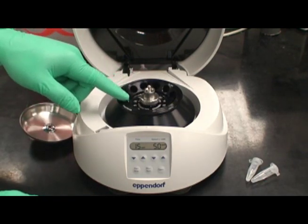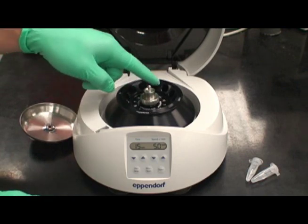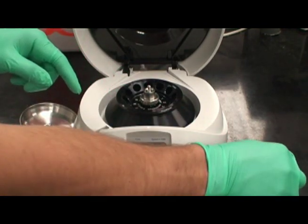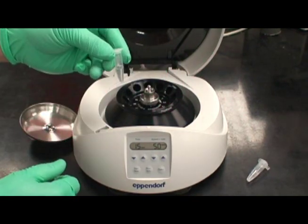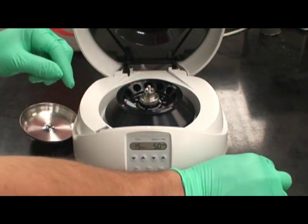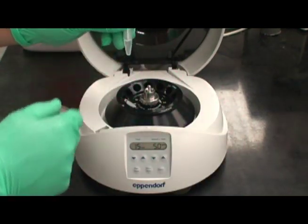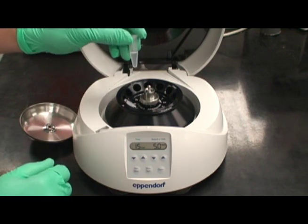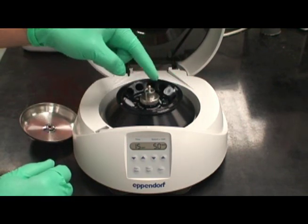Underneath the lid are various slots for small microfuge tubes. A tube may be placed in one of the holes. However, it is important to counterbalance the tube with another tube of similar contents. The tube should be placed directly across.